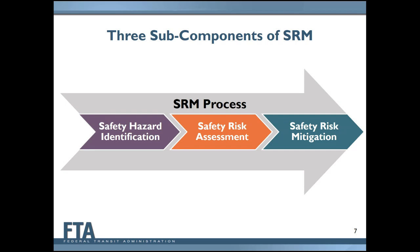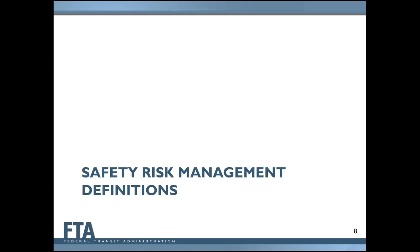The SRM process, as defined by the rules, is made up of three SRM elements: number one, safety hazard identification; number two, safety risk assessment — the topic of our webinar today; and number three, safety risk mitigation.